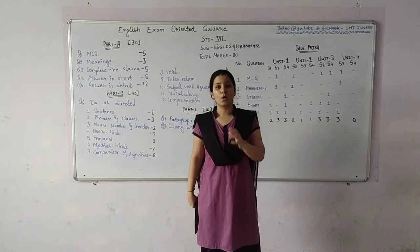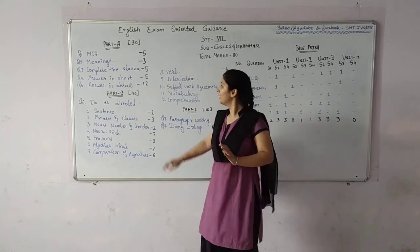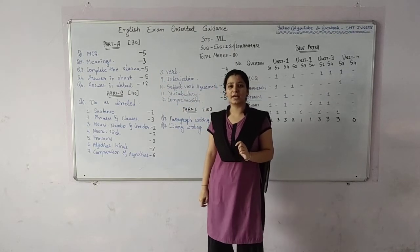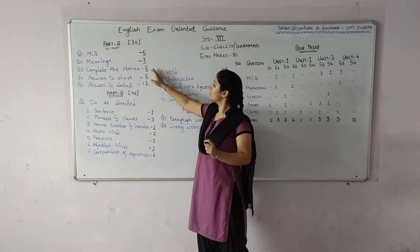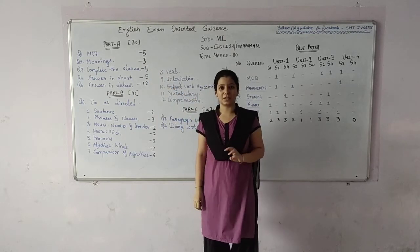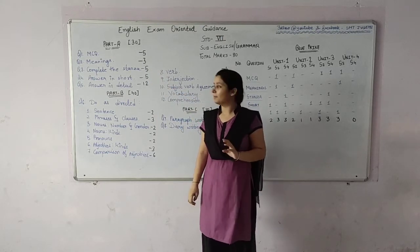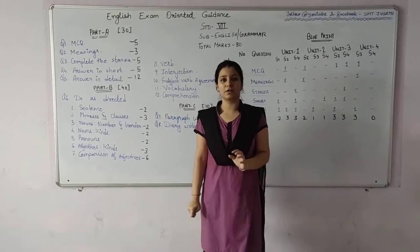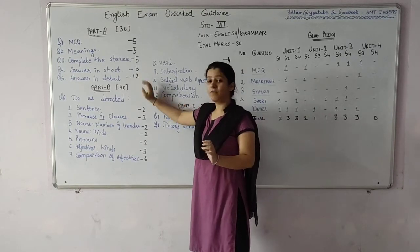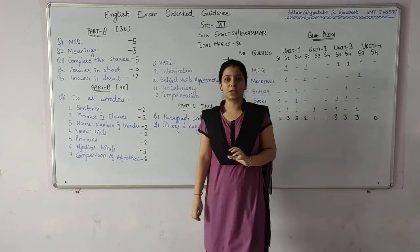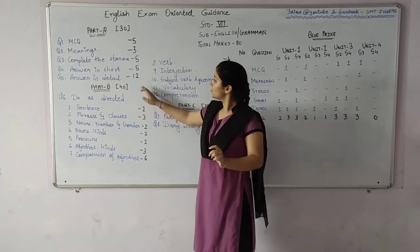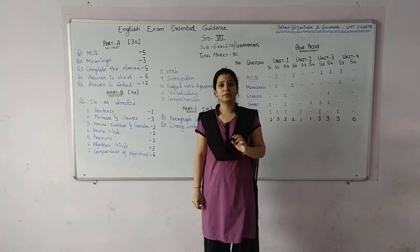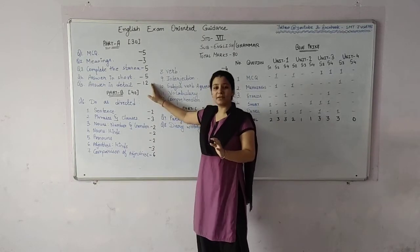We will discuss what questions are available in Part A. Question 1 is of five marks, there will be five questions and each carries one mark. Question 2 is of meaning, three marks, there will be three questions each carrying one mark. Answer in short is of five marks, five questions given each carrying one mark. The last question will be of twelve marks with six questions, each carrying two marks. This is all about Part A, which is from English.